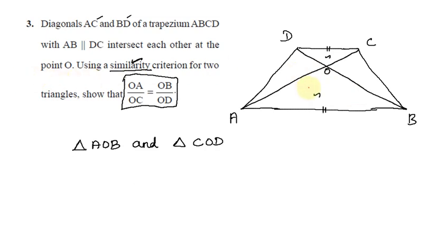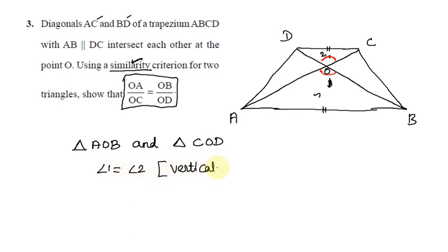In these triangles, angle 1 equals angle 2. The reason is that they are vertically opposite angles.